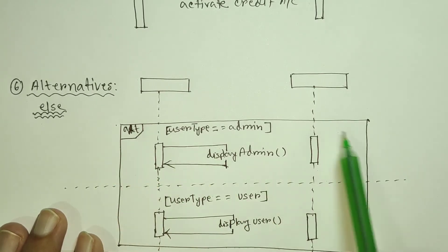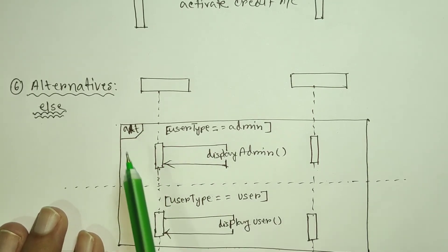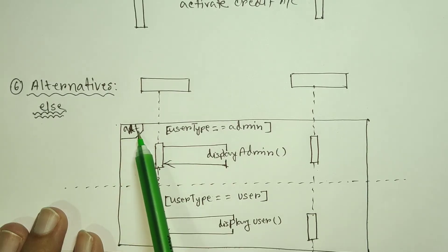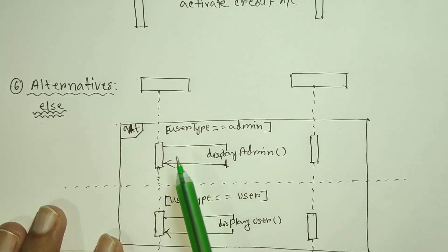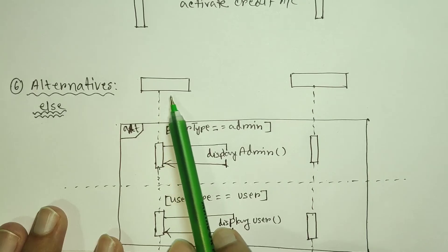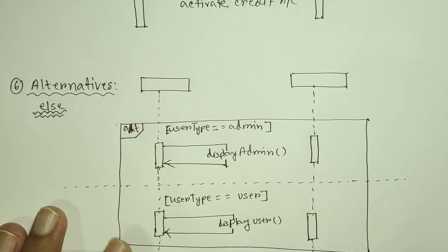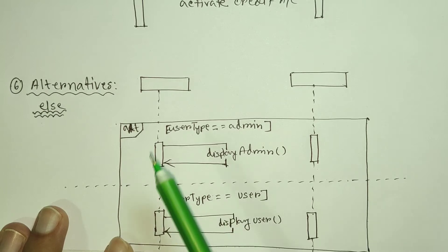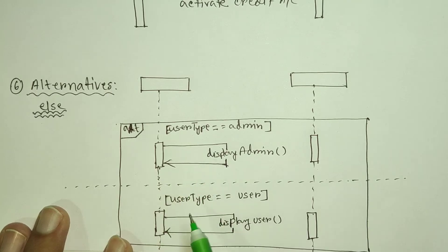An alternative is represented as a box with 'ALT' written on it. This box is the sign for alternatives. For example, when a user logs in, we send a login message. We check the user type — if it is admin, we show the admin panel. The second condition uses else to execute the second condition.